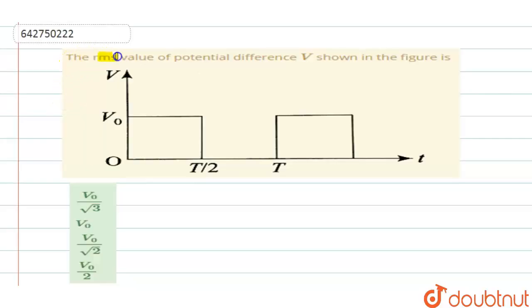The RMS value of potential difference V shown in the figure is... They have given you a graph with voltage V varying with respect to time. From this, you can write the values in different time intervals. They have given us 0 to T/2.